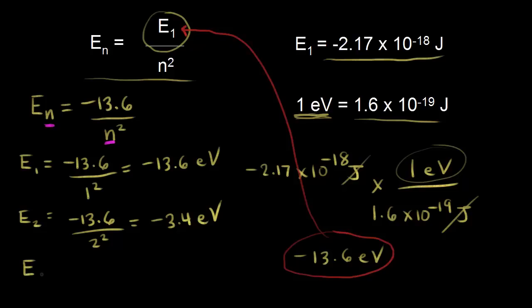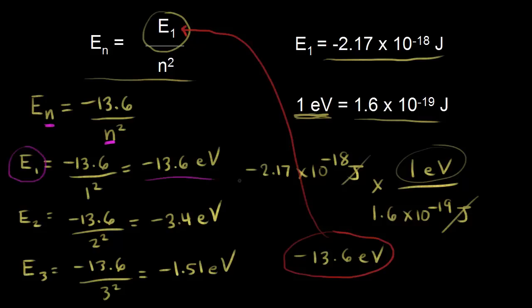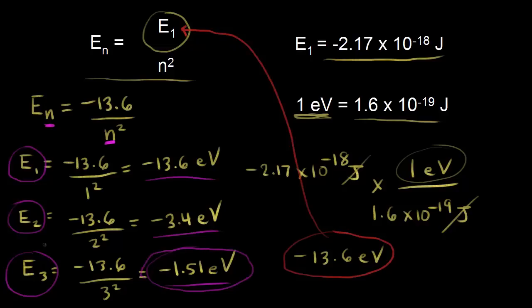The energy for the third energy level is equal to negative 13.6 divided by three squared, which gives you negative 1.51 electron volts. So we have E1 equals negative 13.6, E2 equals negative 3.4, and E3 equals negative 1.51 electron volts. Energy is quantized using the Bohr model — you can't have a value in between those energies. Note that the energies are negative, and E3 is actually the highest energy because it's closest to zero.